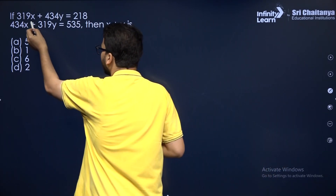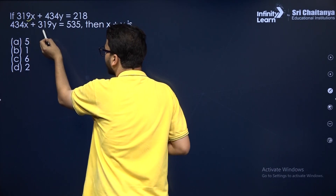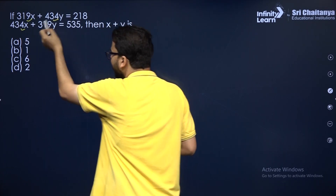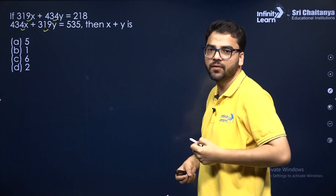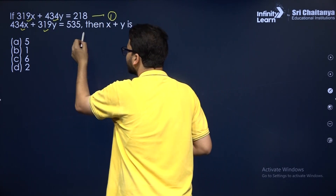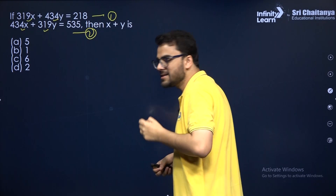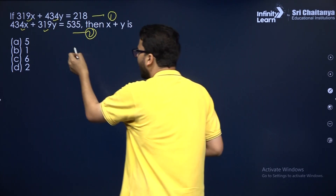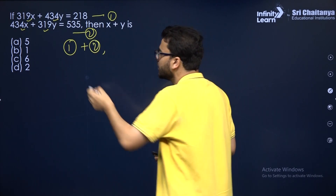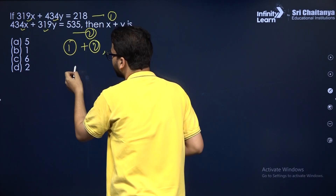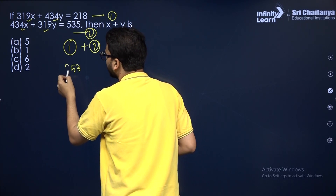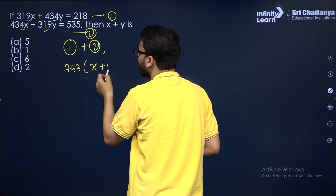Whenever you get a question like this, you see the coefficient of x and coefficient of y — they are interchanging in the two equations. So whenever you get a question like this, suppose this is the first equation and this is the second equation. What you will do is add the equations first. So adding equations 1 and 2, you will get 753 times x plus y, and you are again getting 753 on the right side.